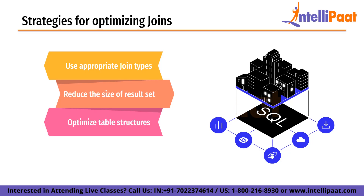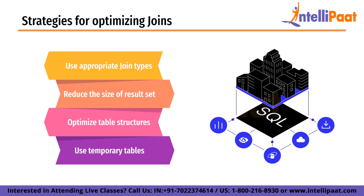Next, optimize table structures. The performance of SQL joins can be affected by the structure of the tables being joined. To optimize performance, ensure that the tables have appropriate indexes, avoid using too many columns in a table, and normalize data to reduce redundancy. Finally, use subqueries or temporary tables — for complex joins it may be more efficient to break up the query into smaller, more manageable pieces, which can improve performance by reducing the amount of data that needs to be processed.